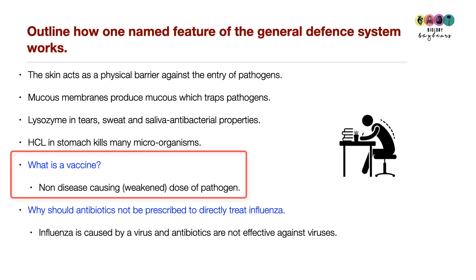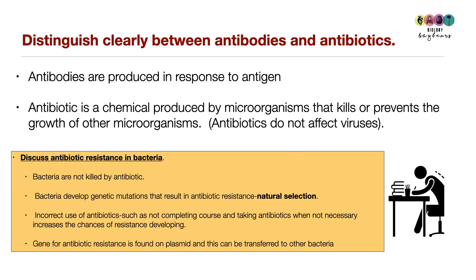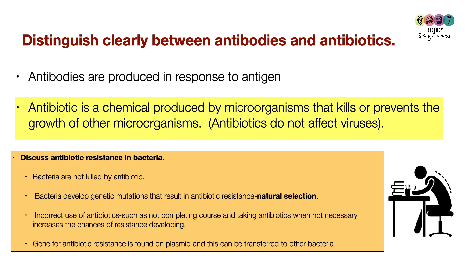What is a vaccine? It is a non-disease-causing (or weakened) dose of a pathogen, or just the antigen. Why should antibiotics not be prescribed for influenza? Influenza is caused by a virus, and antibiotics are not effective against viruses. Distinguishing antibodies from antibiotics: antibodies are produced in response to an antigen; an antibiotic is a chemical produced by microorganisms that prevents or kills the growth of other microorganisms, and antibiotics have no effect on viruses.